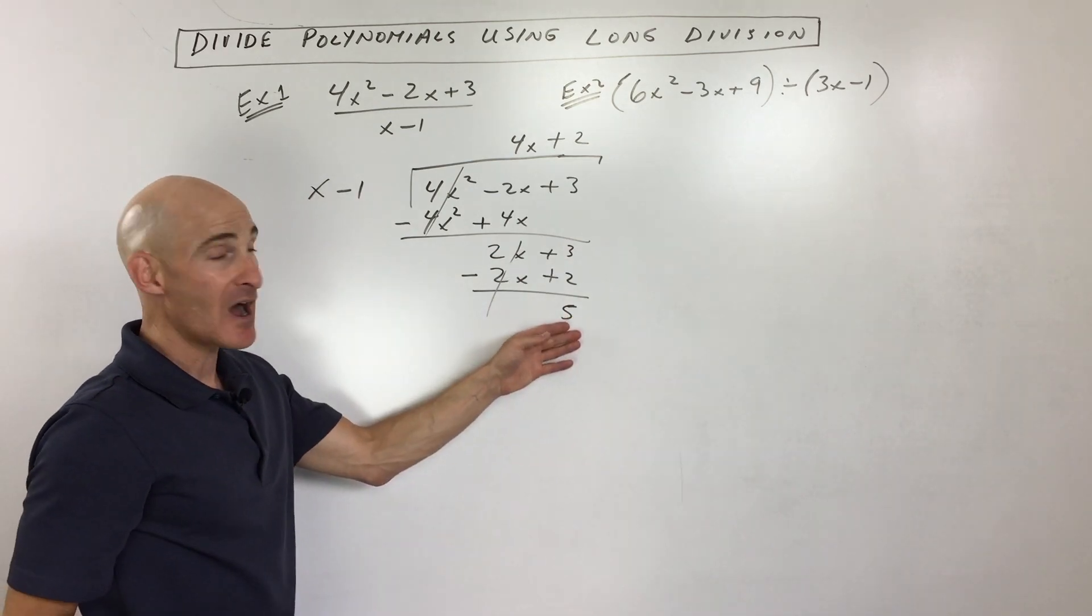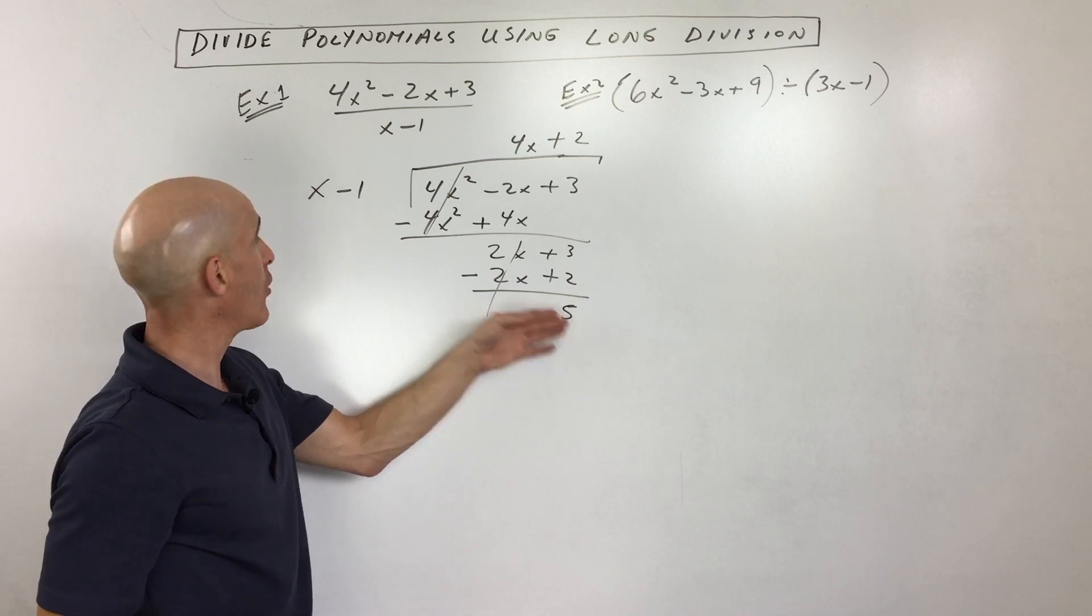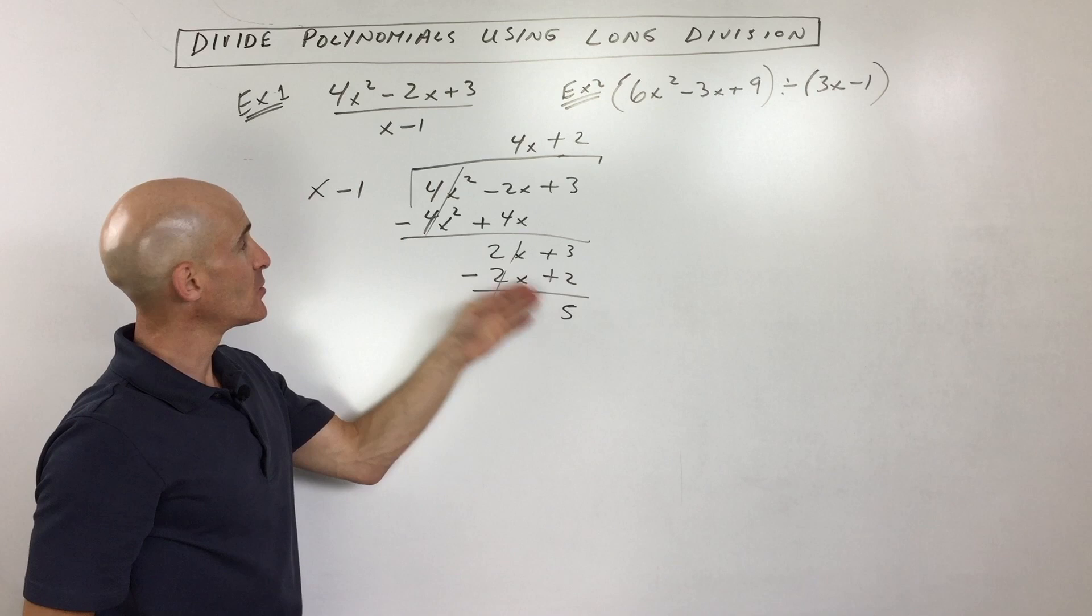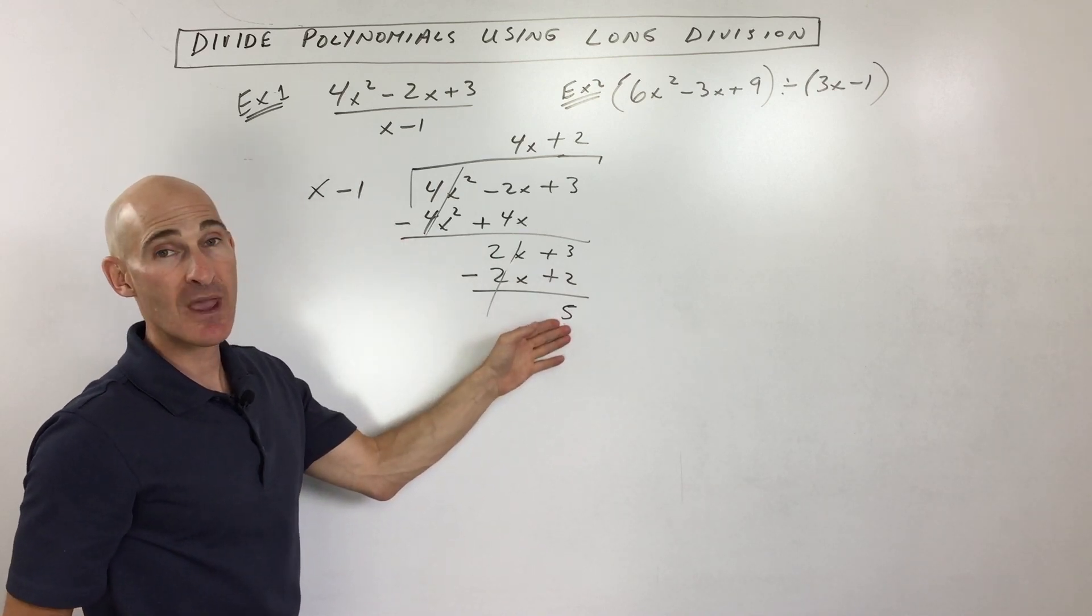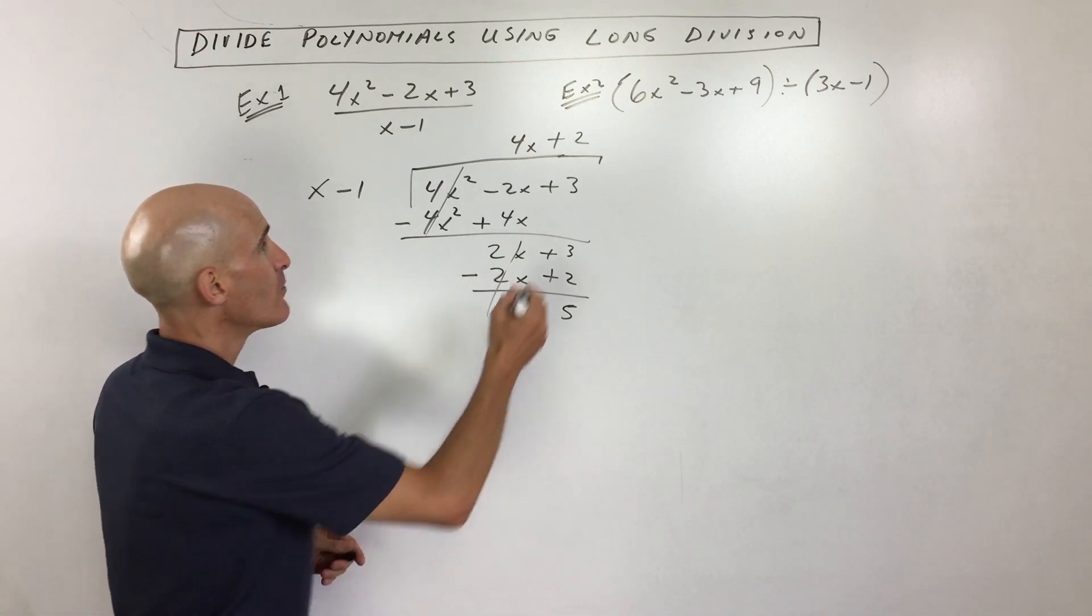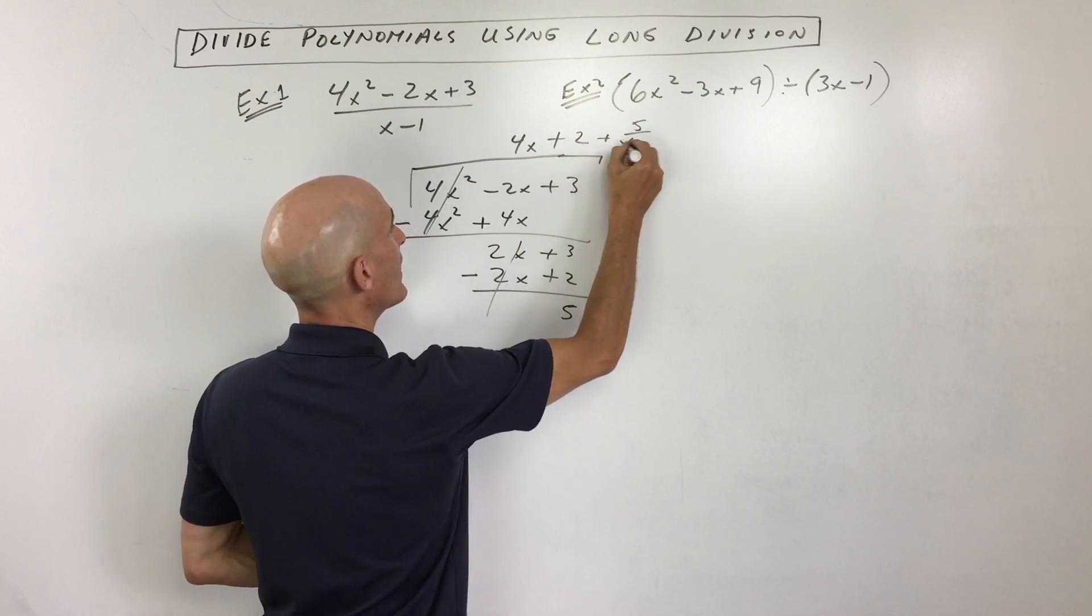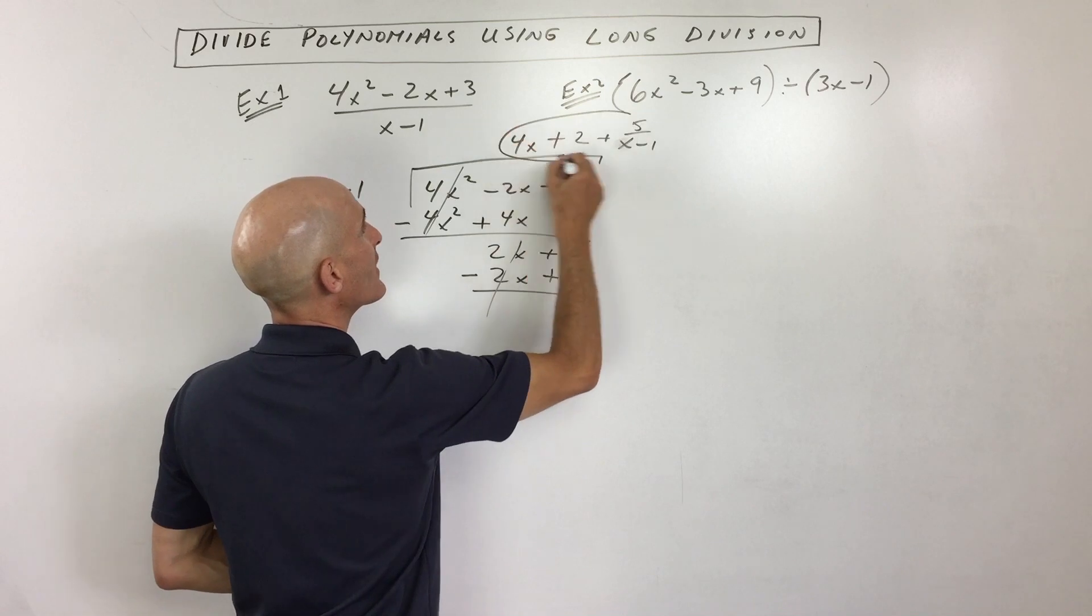Now you can see that 5 is a constant. It's actually called degree 0. This is degree 1. See the first degree, first power. This degree is lower than this degree, which means that this is our remainder. Now what do we do with the remainder? We put the remainder over the divisor, which in this case is what? x minus 1. And that's our final answer.